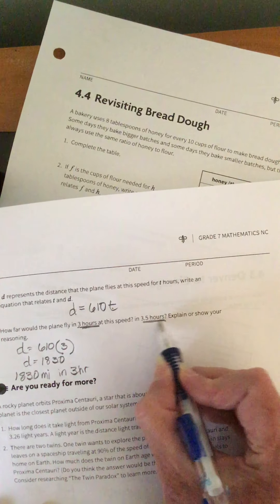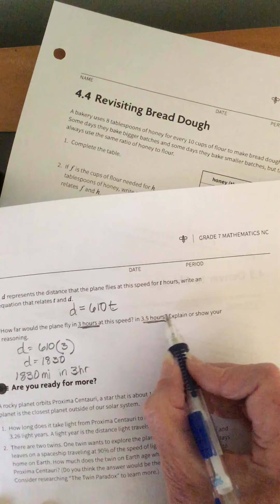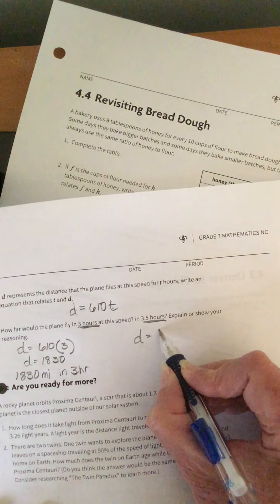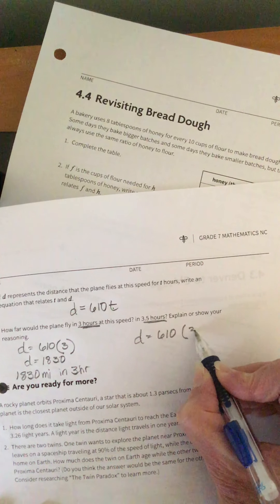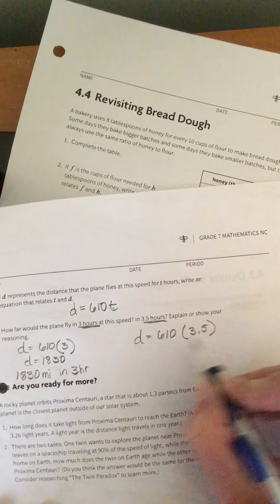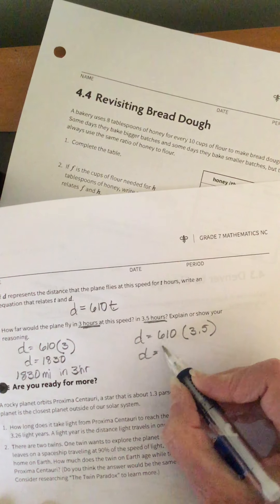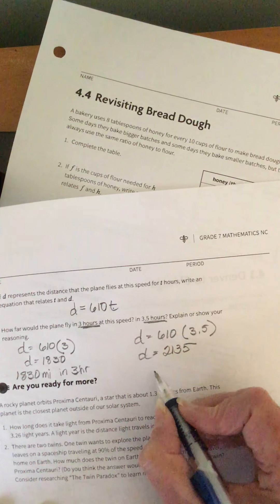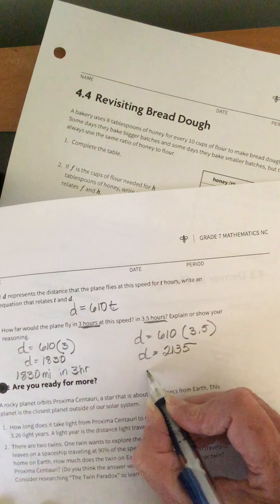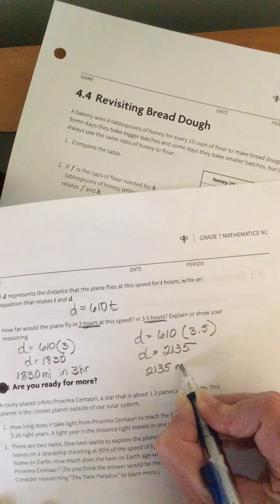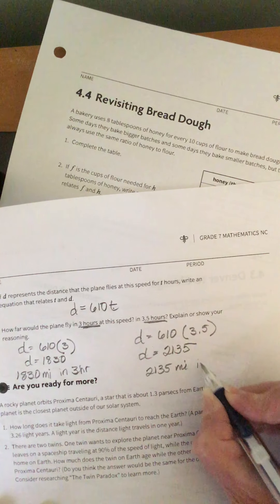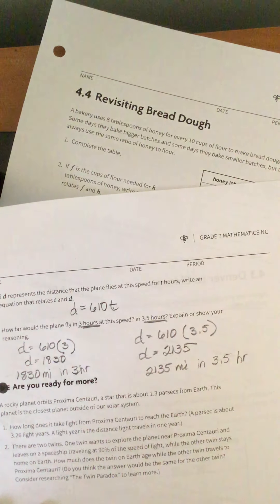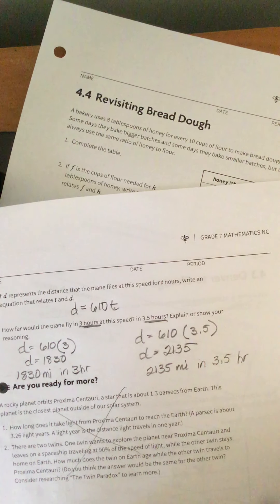We'll always have to express our answer with units if we're given units. Alright, now it says 3.5 hours. So once again, we're going to plug in the T for time. So we're going to use the D equals 610 times 3.5 this time. So if you take out your calculator, you would get D equals 2,135. And what does that mean in this problem? That means the plane traveled 2,135 miles in 3.5 hours. Alright, we're going to skip the are you ready for more.